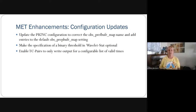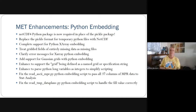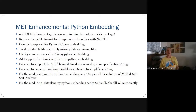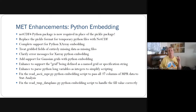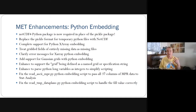TC pairs was updated in its configuration file to only write output for a configurable list at given valid times. We did a lot of work at the beginning of this release on Python embedding to make it much more user-friendly. I would highly recommend updating to version 4.1 just for much more Python embedding flexibility. It's all tied to NetCDF4 for temp files rather than the previous pickle logic, which had versioning issues. We added a lot of support for XArray, support for Gaussian grids with Python embedding, and exercised Python embedding much more broadly.